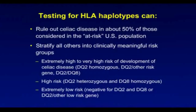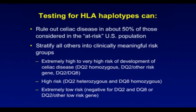There are several clinical applications from these findings. In our data set we could rule out celiac disease in about 50% of those considered to be at risk in the US population, because they either had relatives with the disease or their physicians thought they had symptoms. For the rest, we could stratify them into clinically meaningful risk groups, including an extremely high to very high risk for those who were DQ2 homozygous, those who had DQ2 with another high-risk gene, or those who were DQ2 with DQ8. Another high-risk group included those who are DQ2 heterozygous and those who are DQ8 homozygous. Interestingly, there was also an extremely low-risk group, including those negative for DQ2 and DQ8, and those who had DQ2 paired with another low-risk gene, putting them at decreased risk compared with the general population.